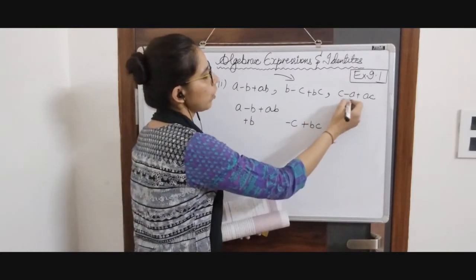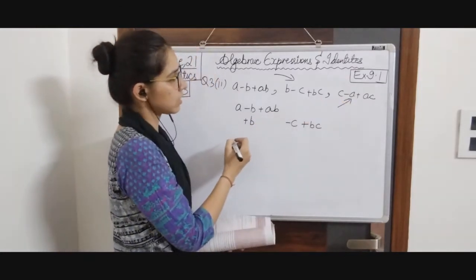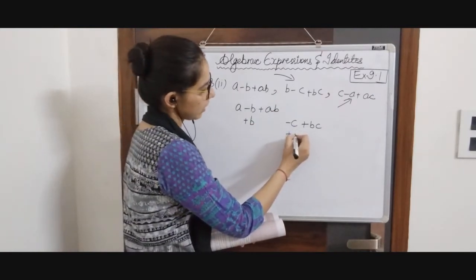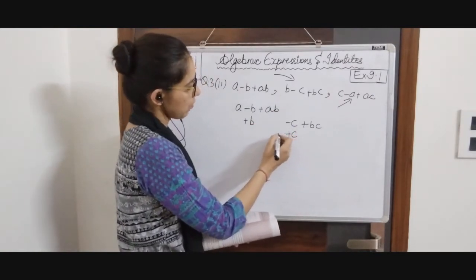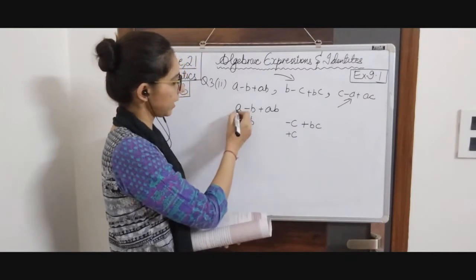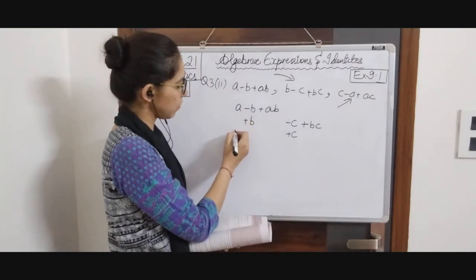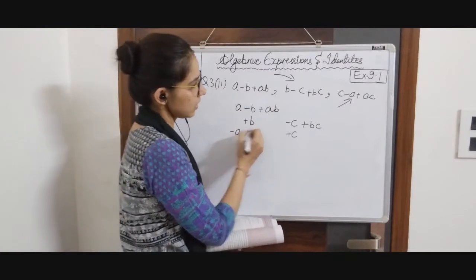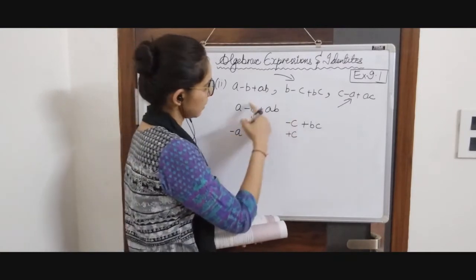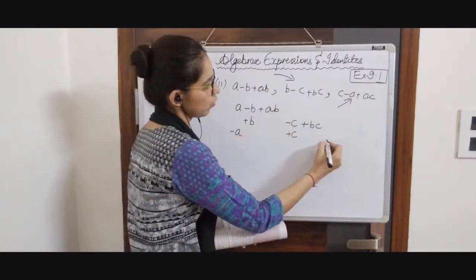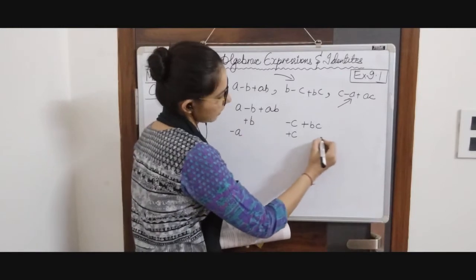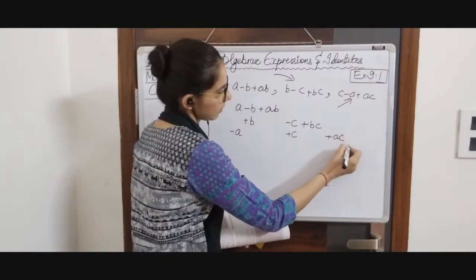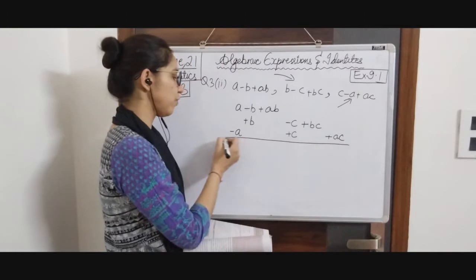Next we move on to the third expression. C will be written here with a positive sign. Then minus A — the like term is A, so we write minus A below A. Then plus AC — there is no like term for AC, so we will be writing it on the side.